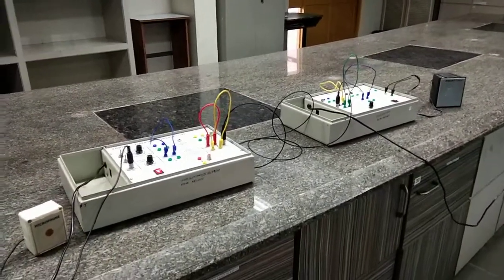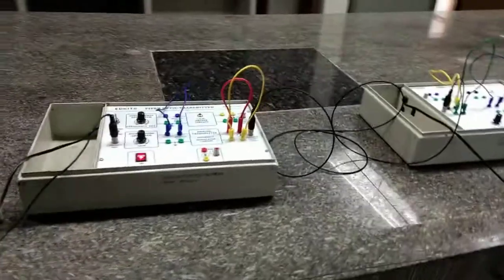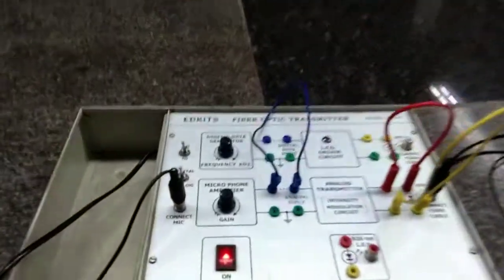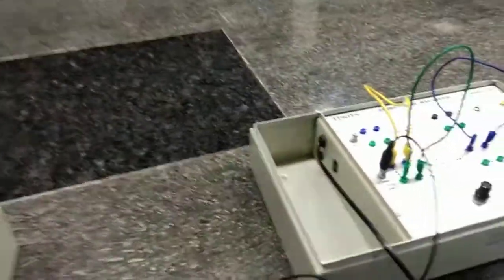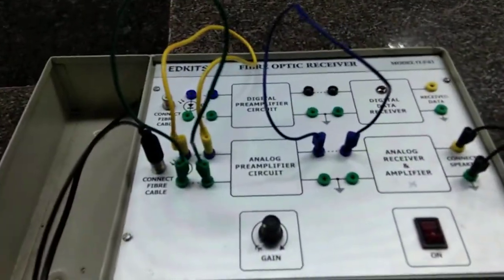So this is basically a fiber optic communication system kit which consists of three main parts: a transmitter, the optical fiber, and then a receiver.